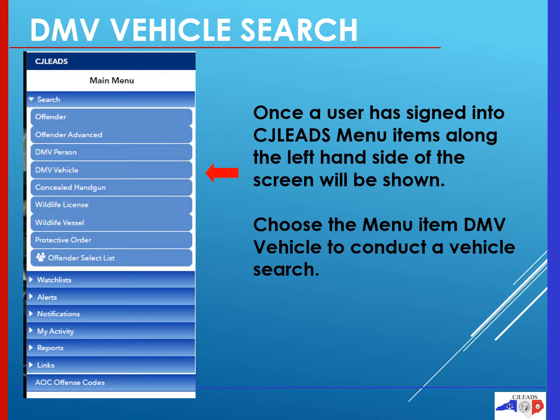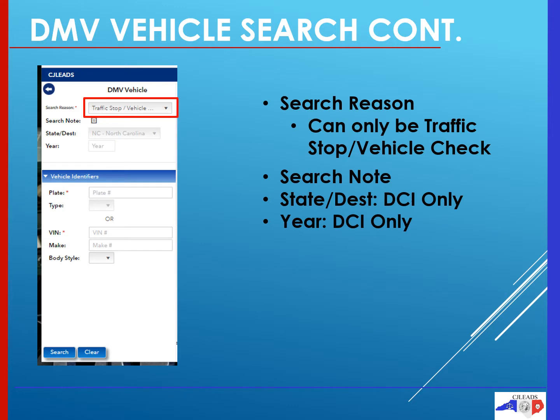We will now go into our second DMV search, which is a DMV vehicle search. Once again, just like the first search, once you have signed in to CJ Leads, to the left are menu items. You may simply choose DMV vehicle and click on it to start your vehicle search. Just as with the DMV person search, only one search reason can be selected, and CJ Leads has already provided that search reason for you: it is the traffic stop/vehicle search.